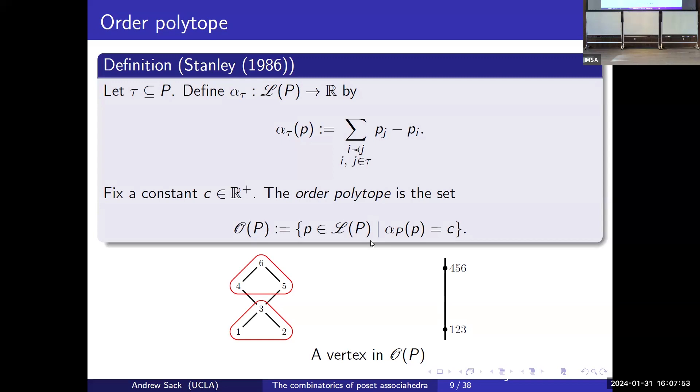For a fixed positive constant C, the order polytope is the set where we take alpha of the entire poset to be equal to the constant. If you've seen the order polytope before, this might look totally different from how you've seen it. A standard order polytope has C equals one and also requires the coordinates to be between zero and one. But a lot of the properties that we know and love are still preserved. This is a slight generalization because instead of the order polytope, we deal with general posets that don't have to have maximal or minimal elements.